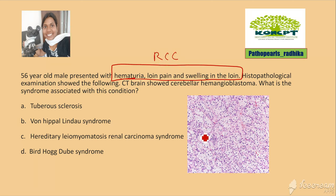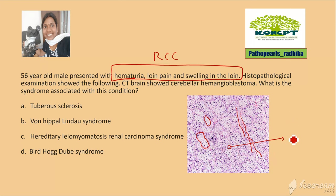What does this biopsy show? You can see small nests separated by delicate blood vessels containing blood, and the cytoplasm is very clear. The blue ones are nuclei; the empty spaces are cytoplasm. This is a clear cell RCC. In addition, the patient is having a cerebellar hemangioblastoma, so there is multiple organ involvement — a syndromic association.